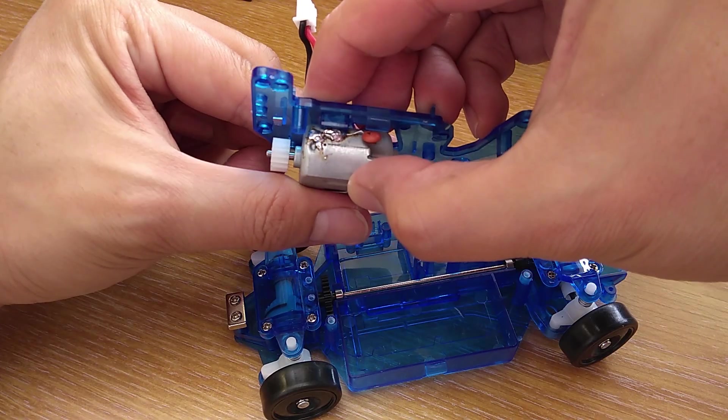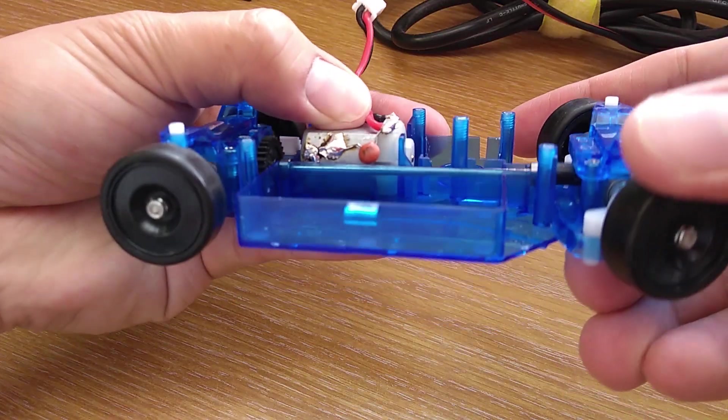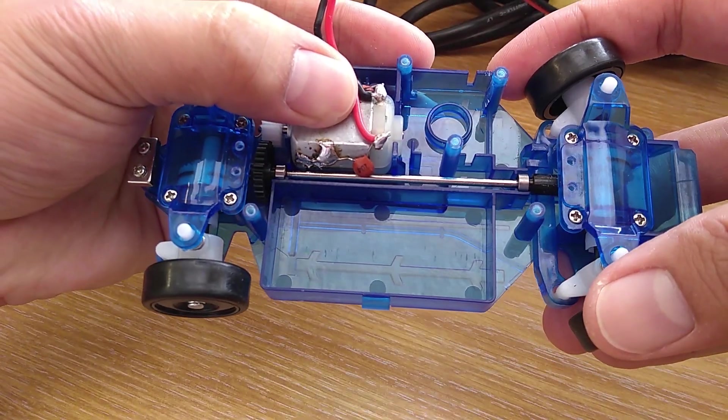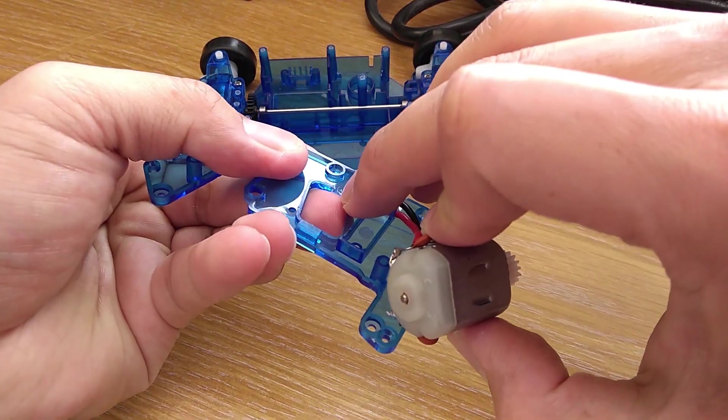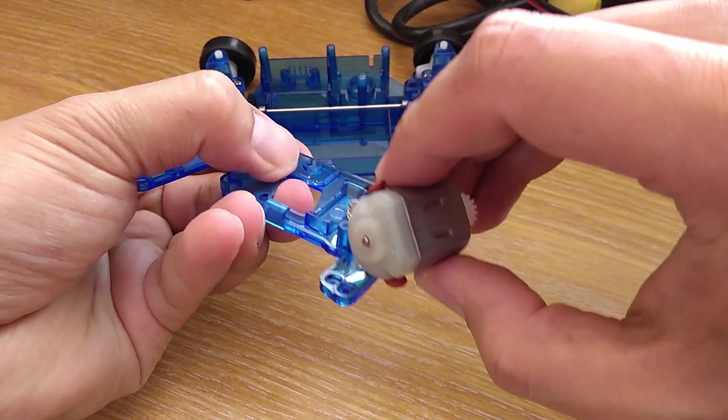Don't forget to check if the capacitor interferes with motor mount or rub against the centre shaft. As it turns out this one is almost perfect. I only have to trim it a bit right here so the motor fits perfectly.